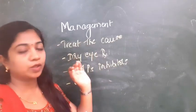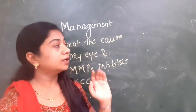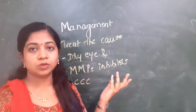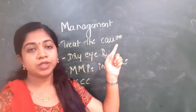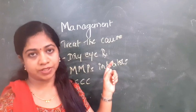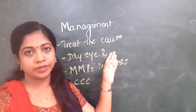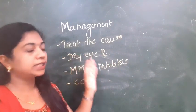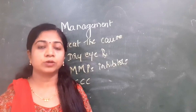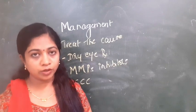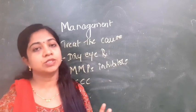Coming to the management of trophic corneal ulcer. There is no specific investigation — just try to find the cause for the trophic corneal ulcer or the cause for trigeminal nerve dysfunction, and if found, treat the cause wherever possible. Treatment is along the lines of dry eye treatment: give plenty of preservative-free lubricating eye drops and lubricating eye ointment, avoiding preservatives like benzalkonium chloride. Cycloplegic drugs and topical antibiotics can also be used.